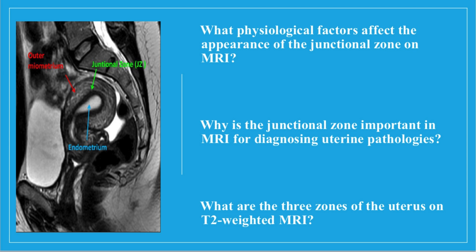There are a few physiological factors that affect the appearance of the junctional zone on MRI. The junctional zone is less distinct pre-menarche, during pregnancy, and in post-menopausal patients, due to changes in fluid content.